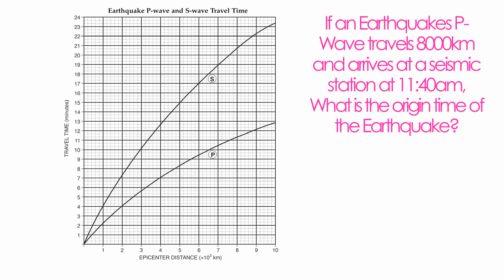Here's a more involved problem. An earthquake P-Wave travels eight thousand kilometers and arrives at a seismic station at 11:40 a.m. — that's eleven hours and forty minutes. We want to know the origin time. Keywords to highlight: 'travels,' 'arrives,' and 'origin time.' What is given to you that you can use right off your chart? Eight thousand kilometers. You find eight thousand, bring it up to the P-Wave, and follow it across.